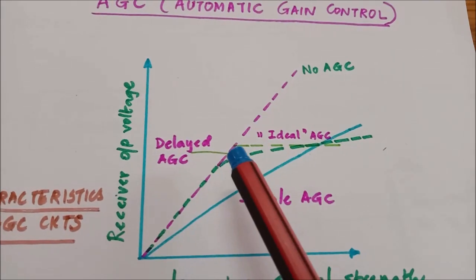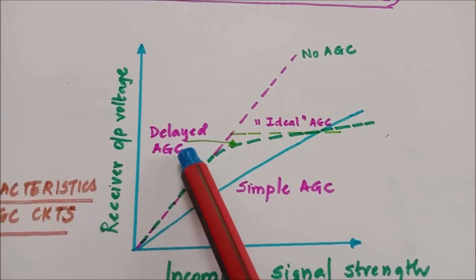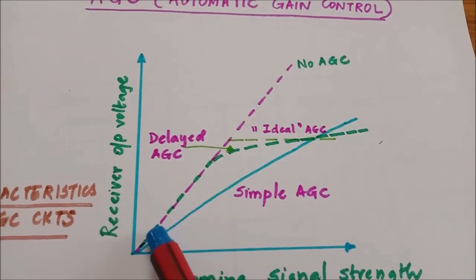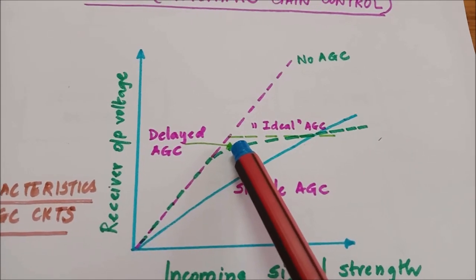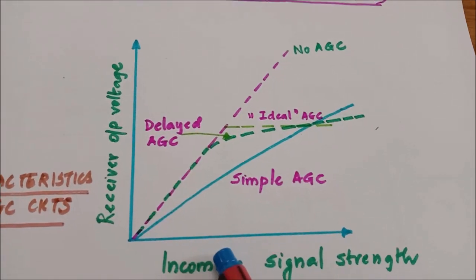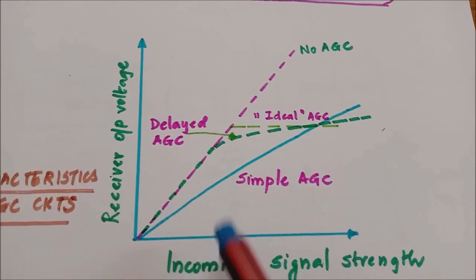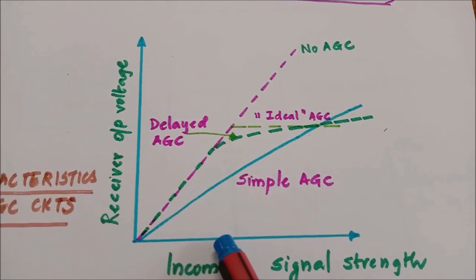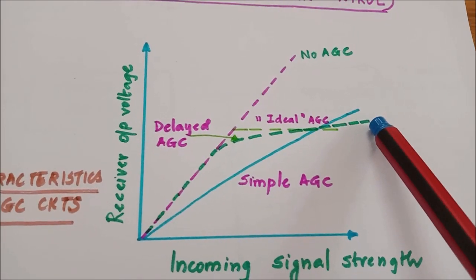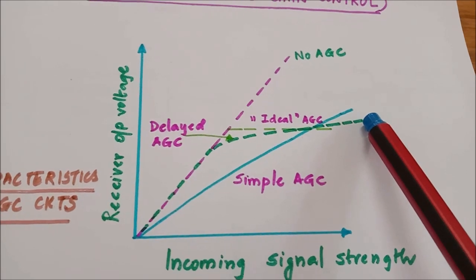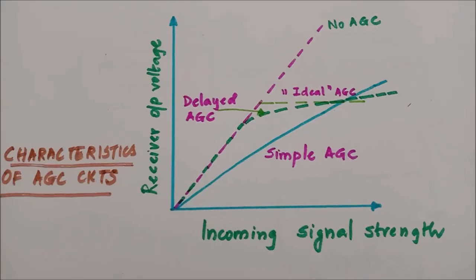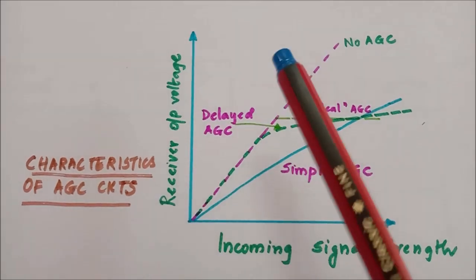This is the concept of an ideal AGC. The circuit employed in actual receivers is the delayed AGC circuit, which is more or less close to the ideal AGC characteristic. In delayed AGC, we set a threshold value. Up to that threshold there is no control given to the amplifiers — they operate with full gain or maximum amplification. Beyond that particular level, we impose a DC bias voltage to reduce the gain of the amplifiers so that the output voltage of the receiver remains constant.